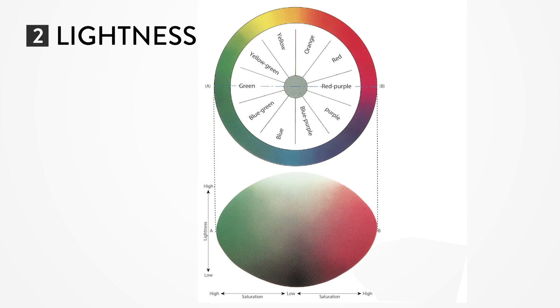Lightness describes how bright or how dark a particular hue is. Saturation describes its vividness or dullness.